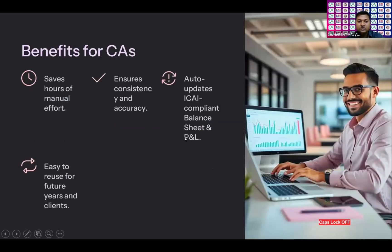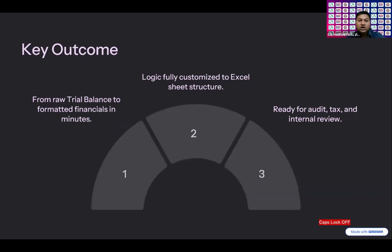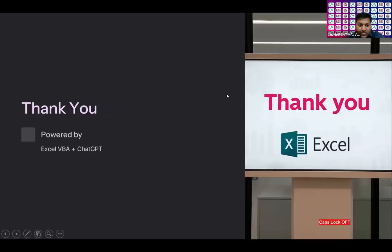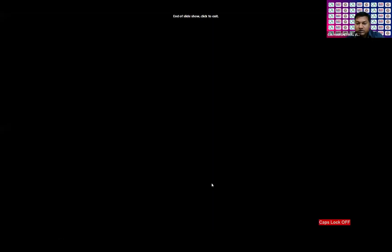The benefits for the CA profession are: it saves hours of manual effort, ensures consistency and accuracy, and auto-updates ICAI-compliant balance sheet and profit and loss account. It is easy to reuse for future years and clients. The key outcome is going from a raw trial balance to formatted financial statements in minutes, with logic fully customized to the Excel sheet structure.